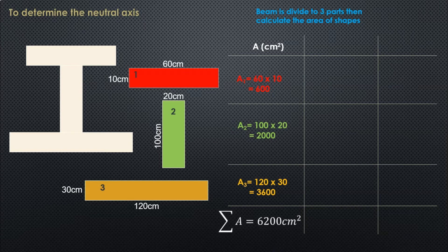The total area of A1, A2, and A3 is 6200 cm squared.